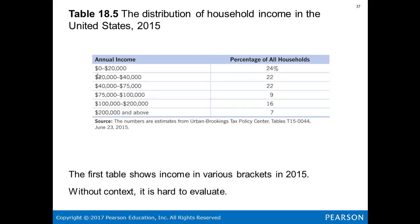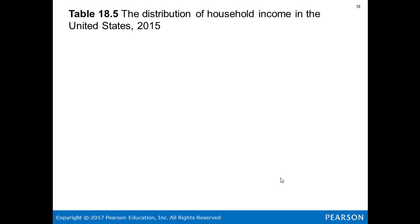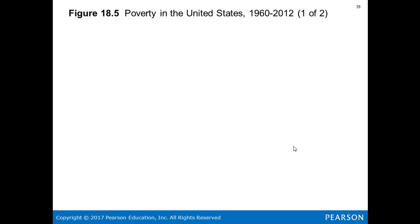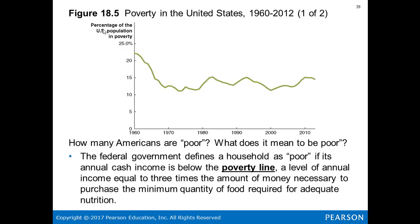Looking at the income distribution: 24% of all households have annual income in the lowest bracket, followed by 22%, 22%, 9%, 16%, and 7% in successive brackets. Without context it is hard to evaluate. We can gain context by looking at how income distribution has changed over time. The percentage of the U.S. population in poverty was around 22% in the 1960s, then declined, went back up, and currently sits around 15%.